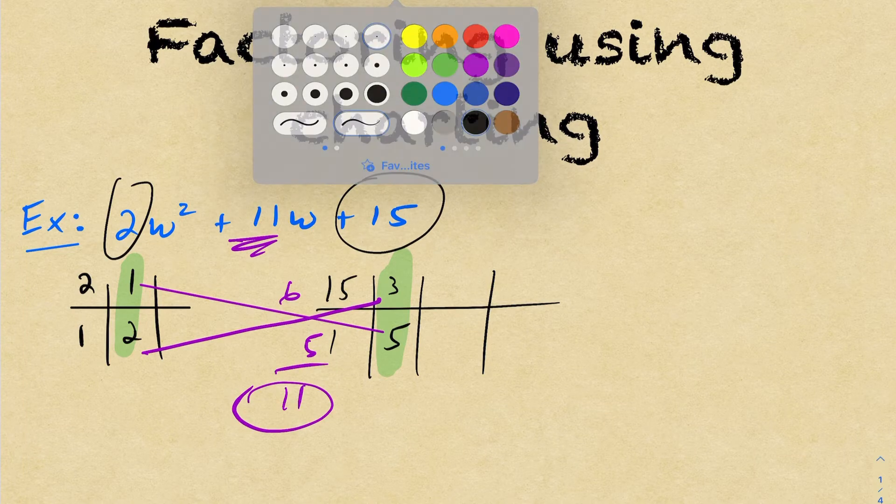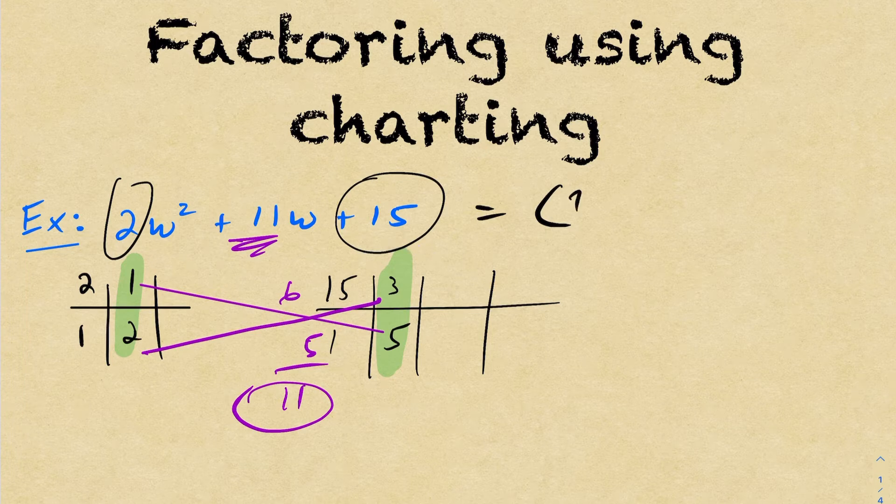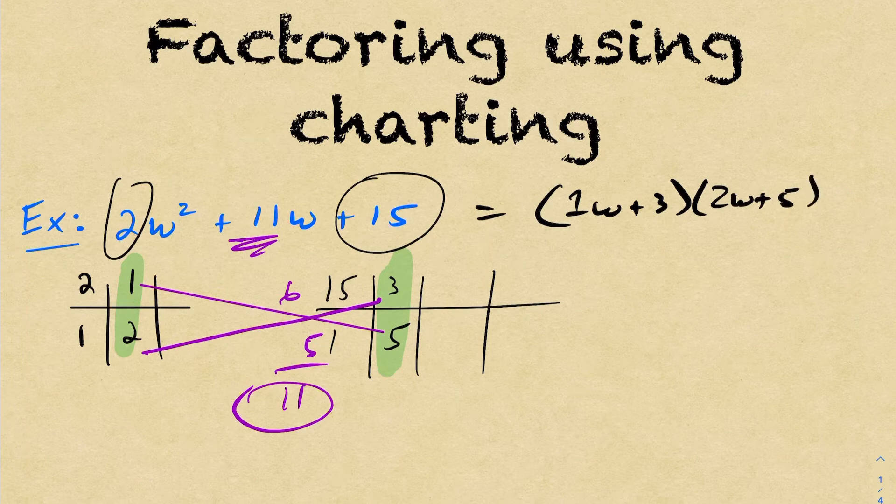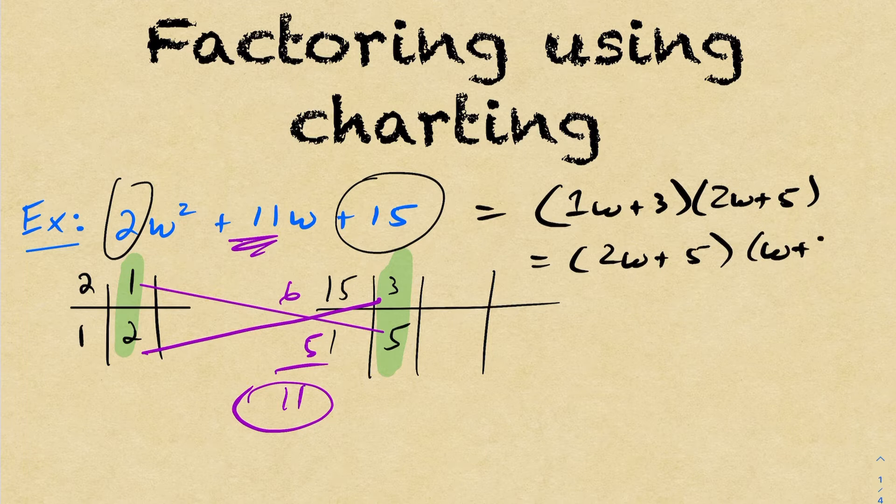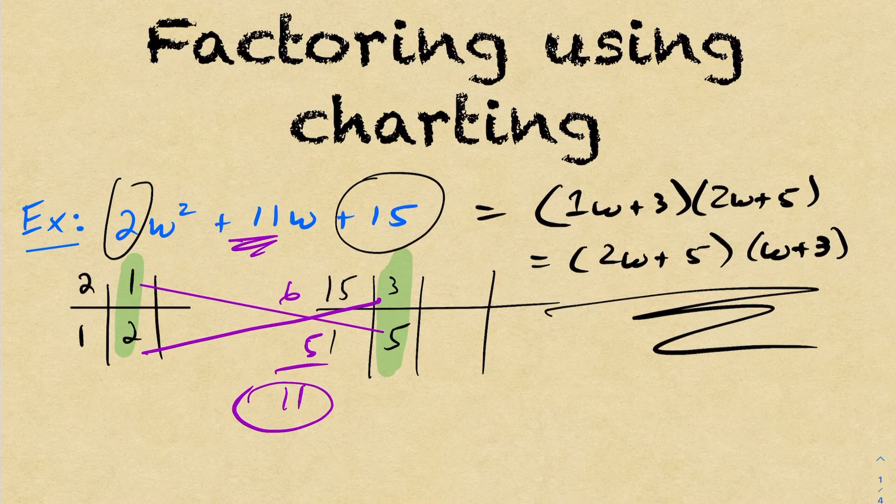Once you find the combination that works here, the only thing you do is you read this from left to right. So by that, I mean it's going to be 1w plus 3, 1w plus 3 times 2w plus 5, 2w plus 5. And obviously order doesn't matter. You can rewrite it as 2w plus 5 times w plus 3. These are all equivalent. Okay, so this is the process for factoring by charting. Obviously you look at more of these, it becomes much easier to do. The first time you see it can be a little confusing and seem like decomposition would be much more efficient. But that is not always the case.